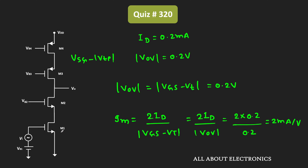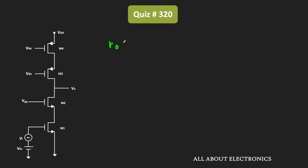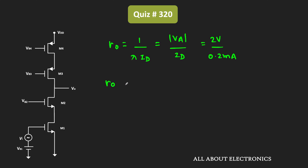Similarly, let RO1, RO2, RO3, and RO4 be the output resistances of these transistors. This output resistance can be given as 1 divided by λ times ID, or equivalently the Early voltage divided by drain current. The Early voltage for all transistors is equal to 2 V while ID is equal to 0.2 mA. That means for all transistors, the output resistance is equal to 10 kΩ.